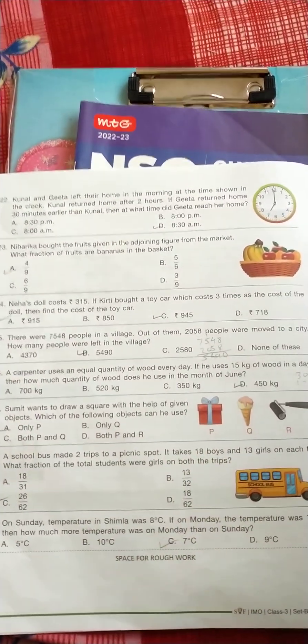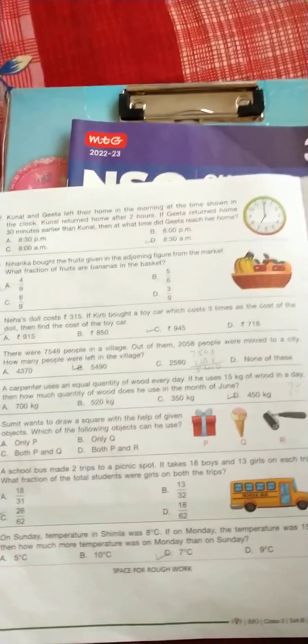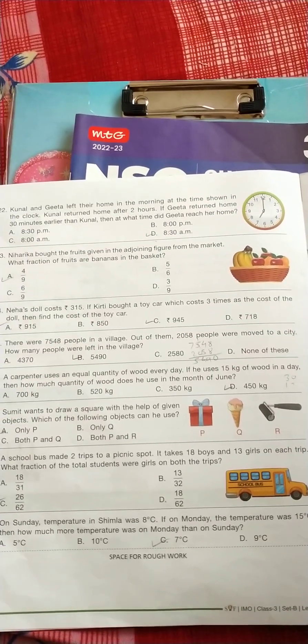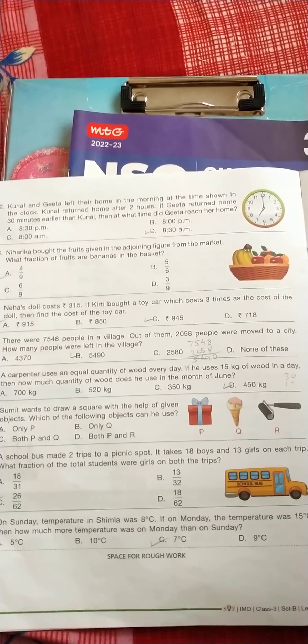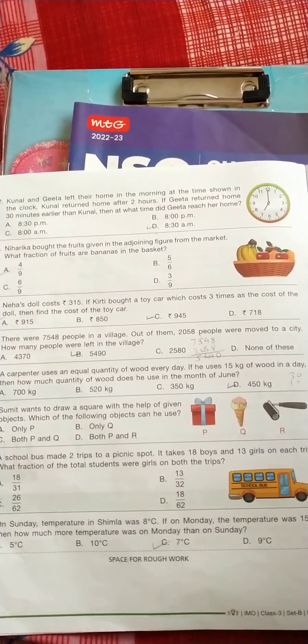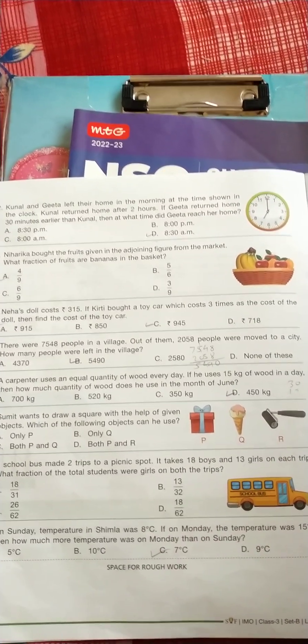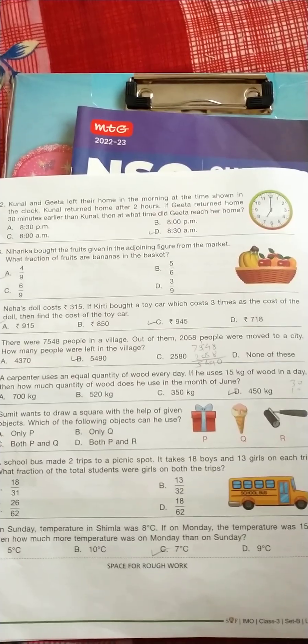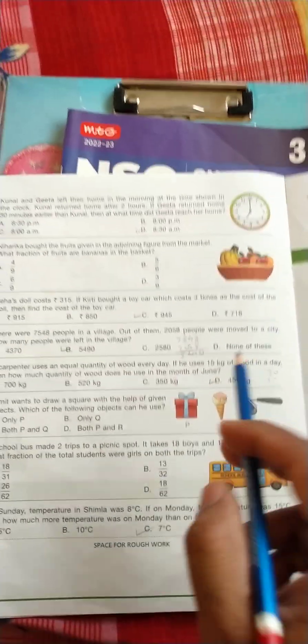Question number 24: Neha's doll cost Rs. 315. If Kirti brought a toy car which cost 3 times as the cost of the doll, then find the cost of the toy car. So it's simply multiply 315 multiply by 3, the correct answer is C, 945.